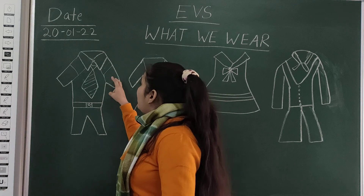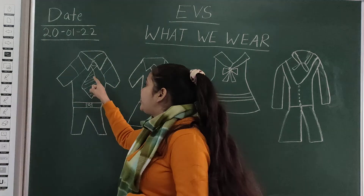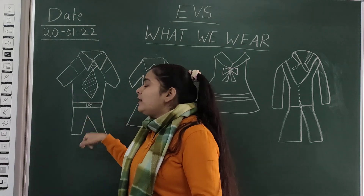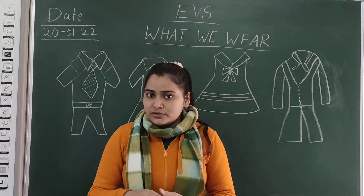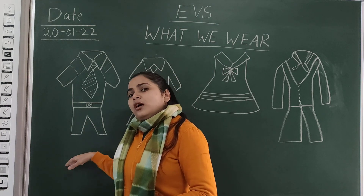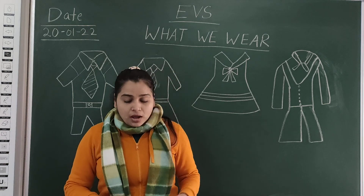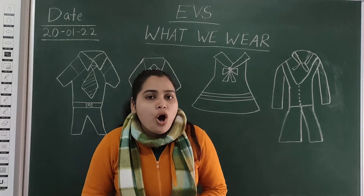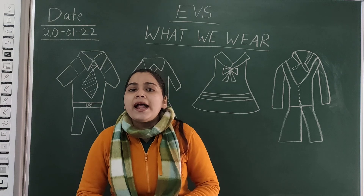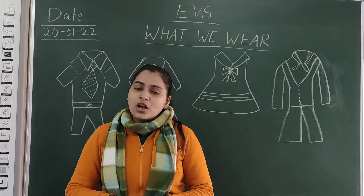So we have shirt, tie, trousers or pants, and belt. And in the legs, what do we wear? In the legs, we wear socks, and in the feet, school shoes. School shoes and socks.